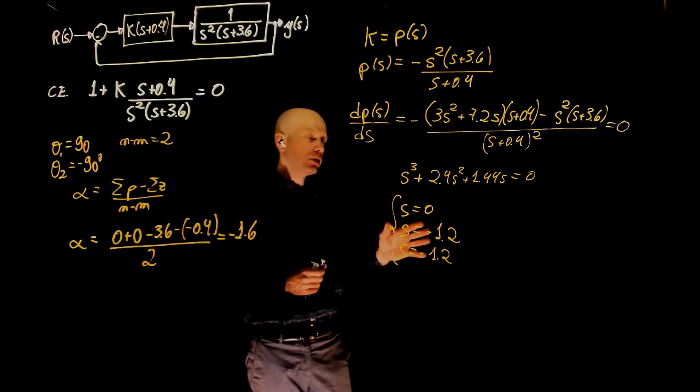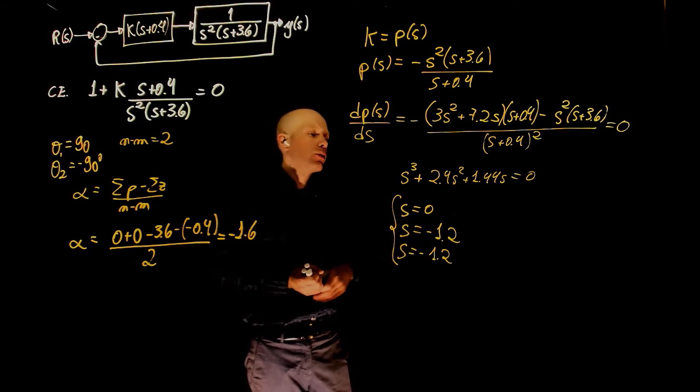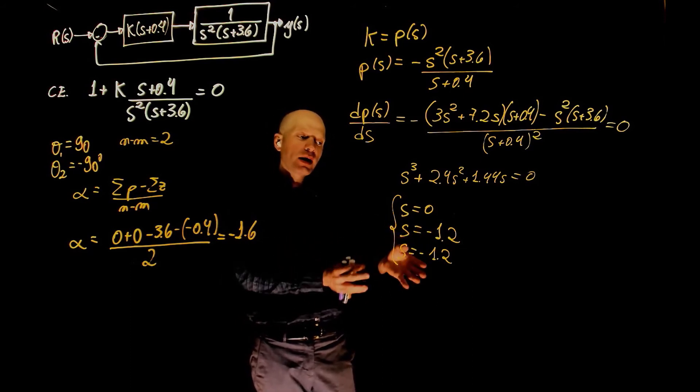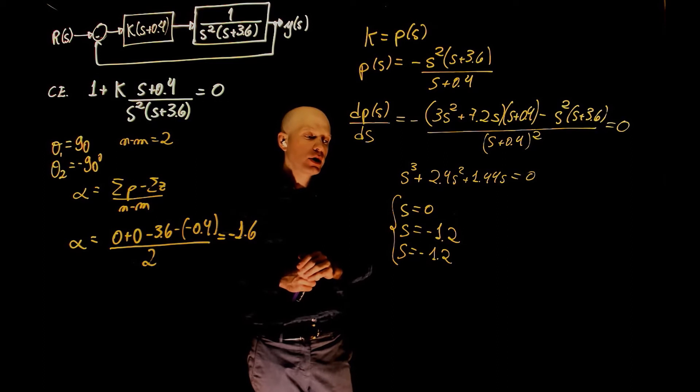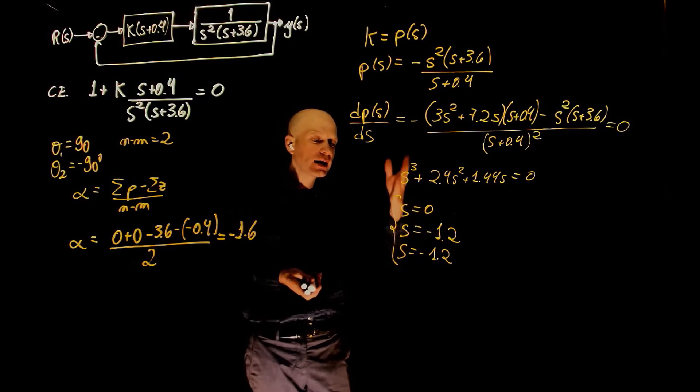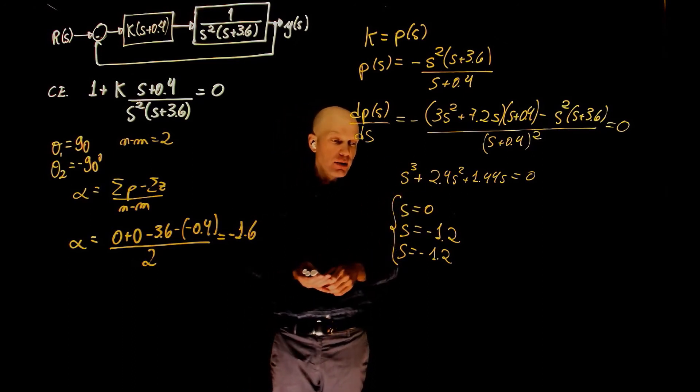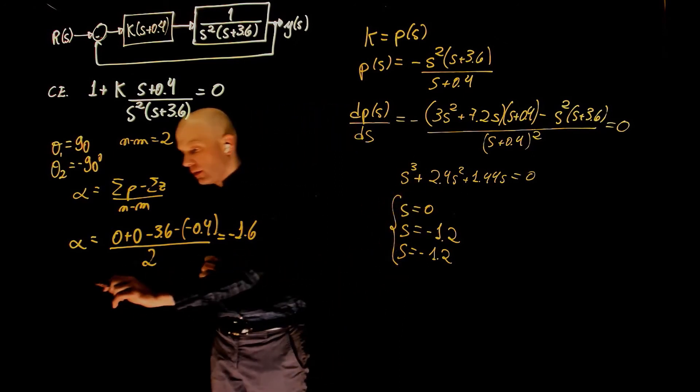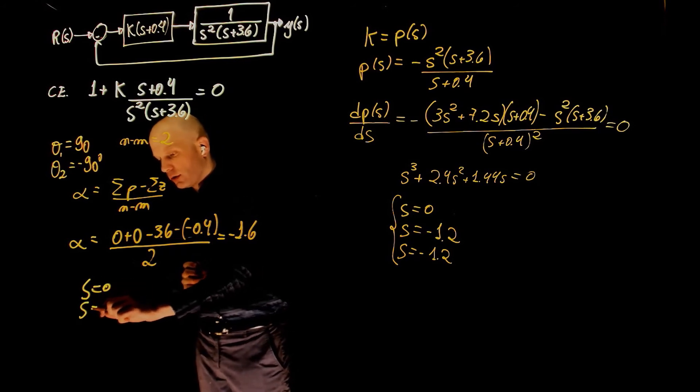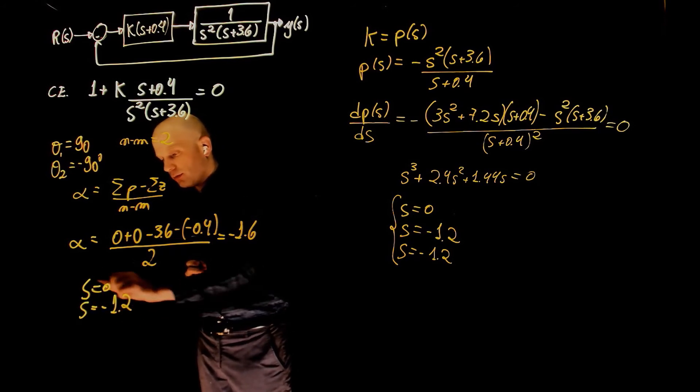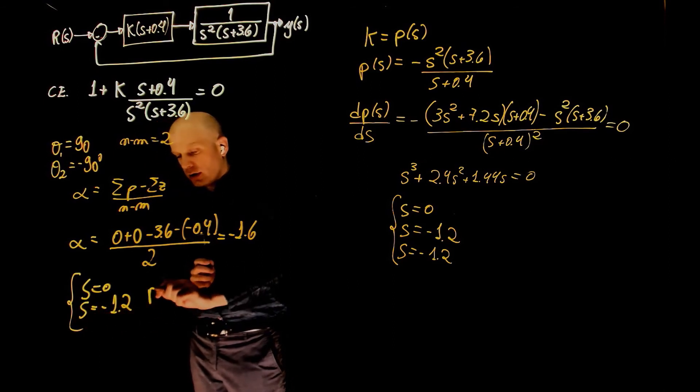These numbers now, because they are real, suggest that there is a breakaway or break-in point. We don't know yet if it is a breakaway or break-in point. Now, we need to determine whether or not they belong to the root locus. So, these are our candidates for now breakaway or break-in point. Let's write them down here at s equals to zero, s equals to negative 1.2.